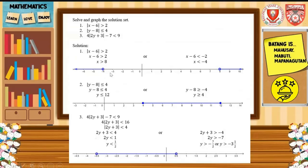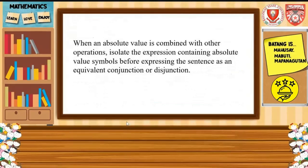In number 1, we use the hollow circle because the inequality symbol is greater than. In number 2, we use a solid dot because the absolute value linear inequality is less than or equal. In number 3, we also use the hollow circle because the inequality symbol is less than. When an absolute value is combined with two operations, isolate the expression containing the absolute value symbol before expressing the sentence as an equivalent conjunction or disjunction.